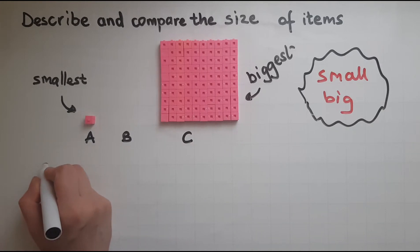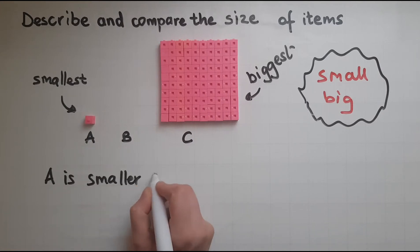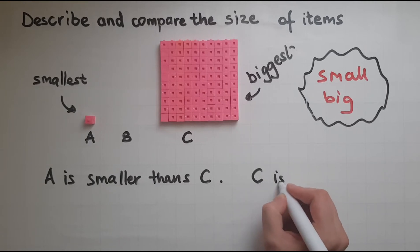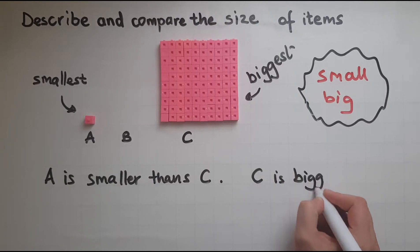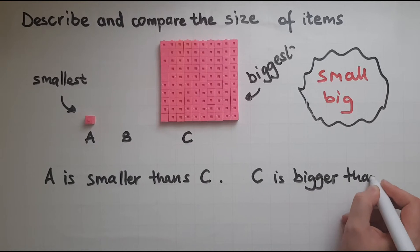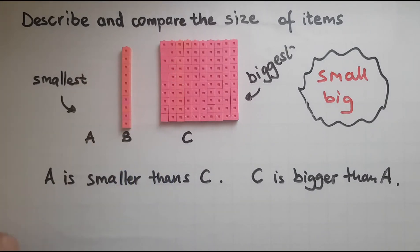So we've got A is smaller than C whereas C is bigger than A. And now if I compare B with C, B is smaller than C.